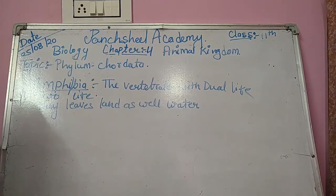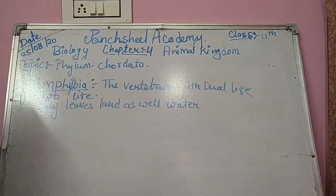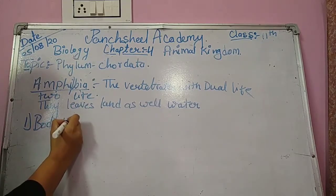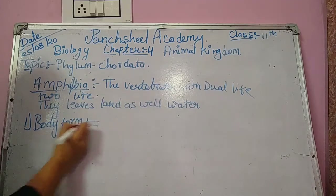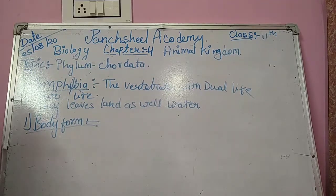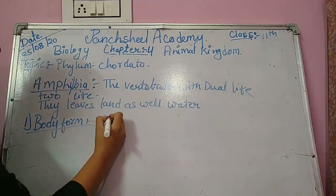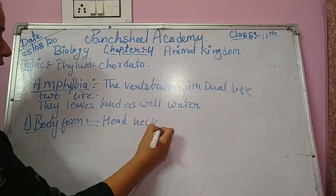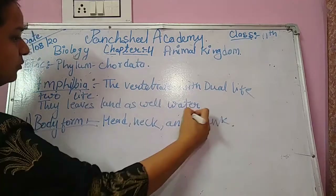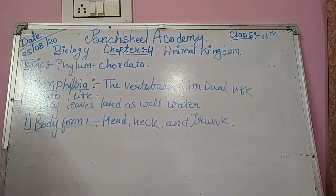If we talk about the body form of Class Amphibia: their body varies in form — it may be long, narrow, short, broader, depressed, or cylindrical. Their body is divided into head, neck, and trunk.